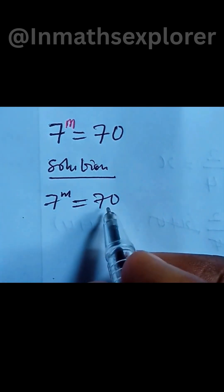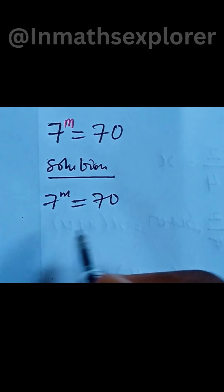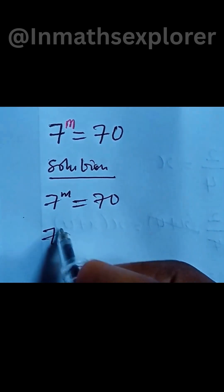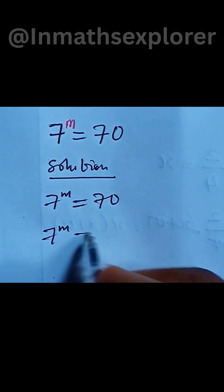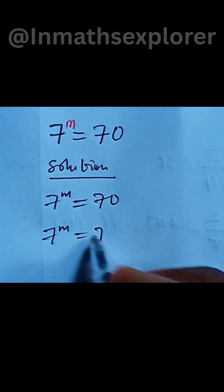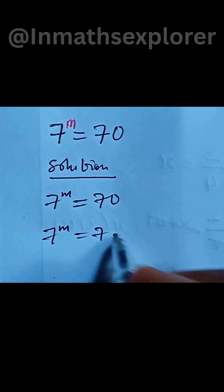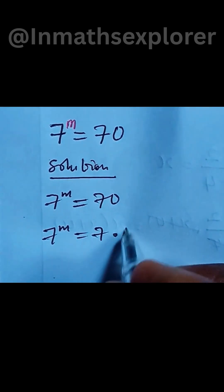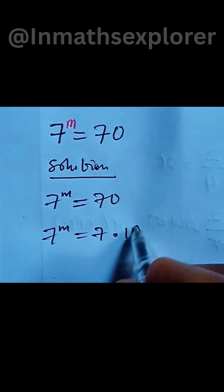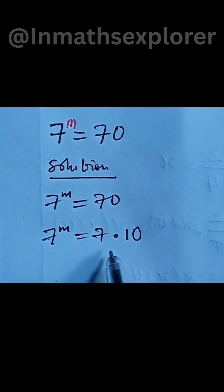So over here we can simplify the right hand side as 7 multiplied by 10. And let's divide both sides by 7.